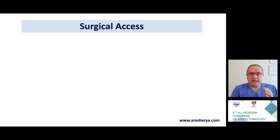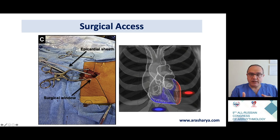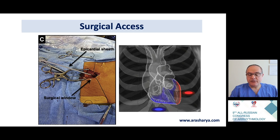When conventional access is not possible, we proceed to surgical access. There are two options: the sub-xiphoid window or a lateral thoracotomy. The choice depends on VT morphology — if the VT is from the inferior wall, we can access via sub-xiphoid puncture; if it is from the high lateral or anterior wall, an anterior or lateral thoracotomy provides the best access to the VT region.